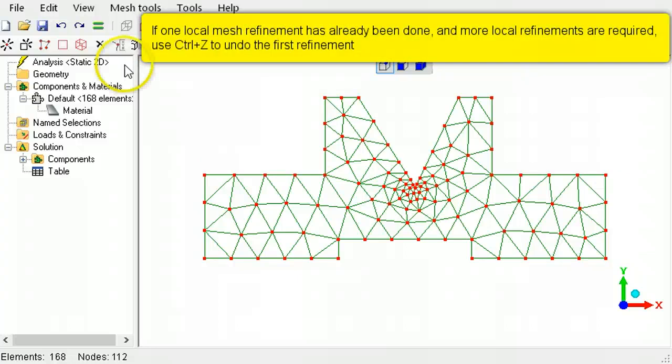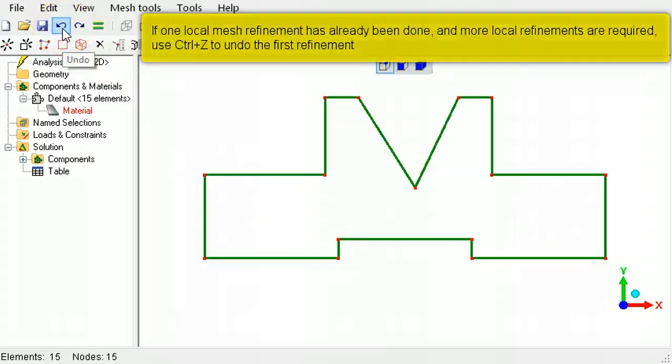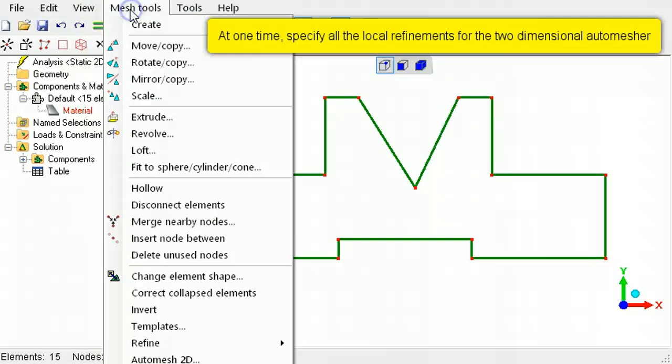To add another local refinement, undo the earlier mesh refinement, then add the additional local refinements.